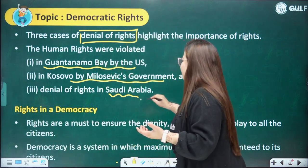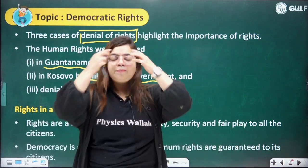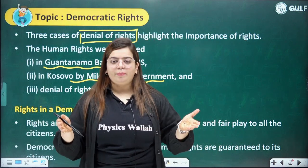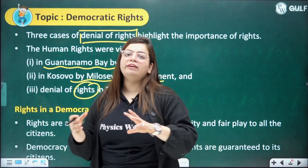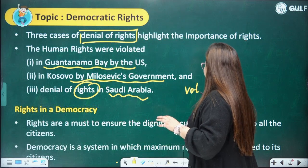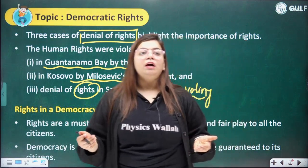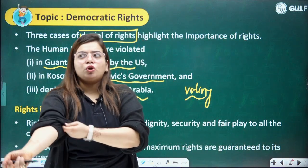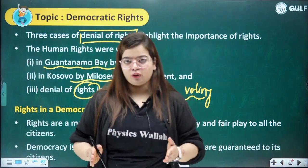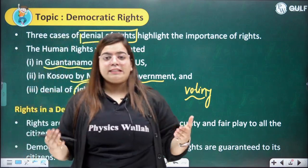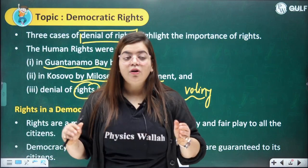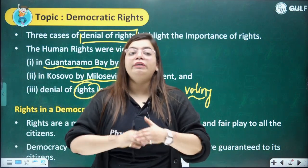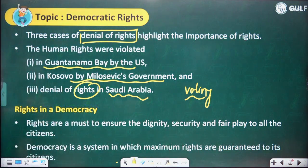The third example is denial of rights in Saudi Arabia. This was historical — things have changed now. The issue was around equality in voting rights, specifically gender equality: women should be given the same voting rights as men. After these historical cases, when we see that rights are not given in some situations, we understand the true value of rights which people deserve in a democratic country.